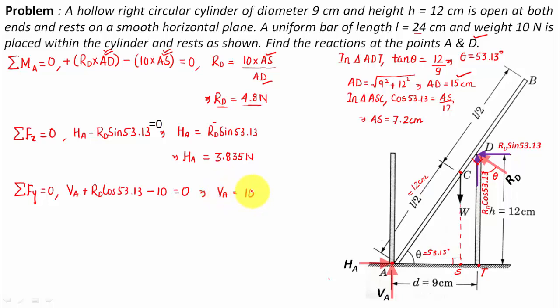So you can essentially rewrite: VA equals 10 minus RD cos 53.13. So RD's value is 4.8. You need to put that value over here and you'll eventually get VA is equal to 7.12 Newtons.